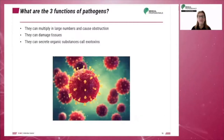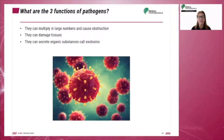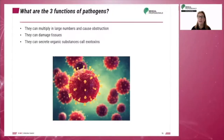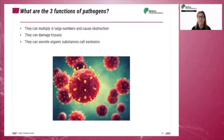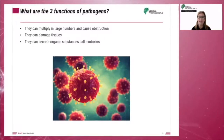Pathogens have three main functions. They multiply in large numbers and cause an obstruction. They cause tissue damage. They can also excrete organic substances called exotoxins. These exotoxins can produce certain side effects, such as an extremely high body temperature, nausea, vomiting, shock, and even seizures.